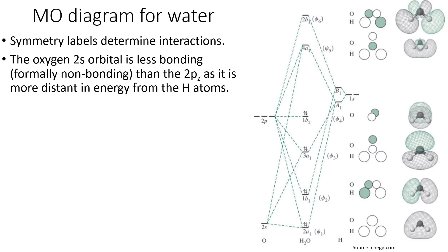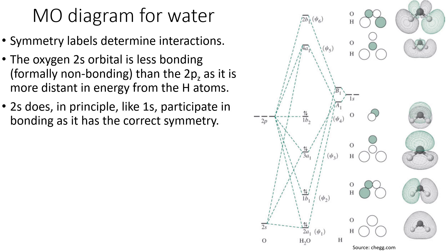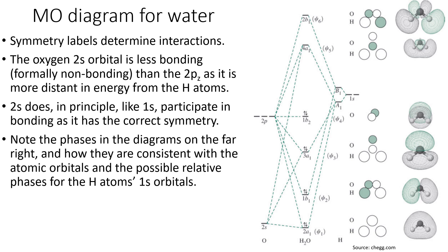The B2 orbital represents the py orbital, which has had no interaction — it has stayed at the same energy as in the atom with a pair of electrons in there. There has been much less interaction with the oxygen 2s orbital, so it is regarded as non-bonding, because its energy is so far distant from the H atom orbitals. You can see the 1s orbital energies are much higher up on the screen.